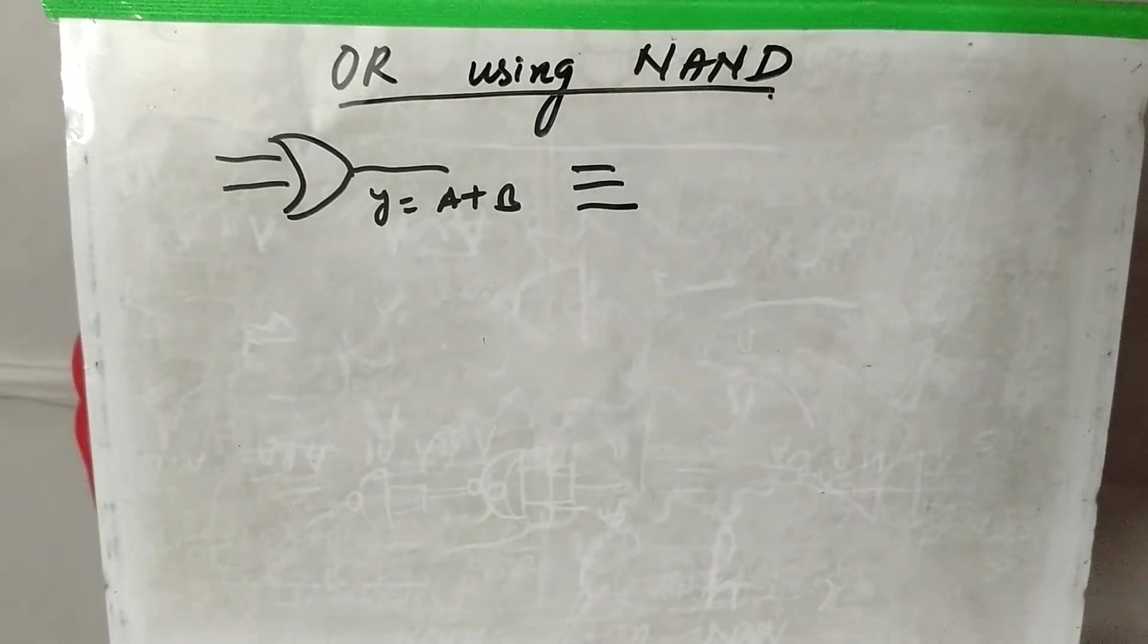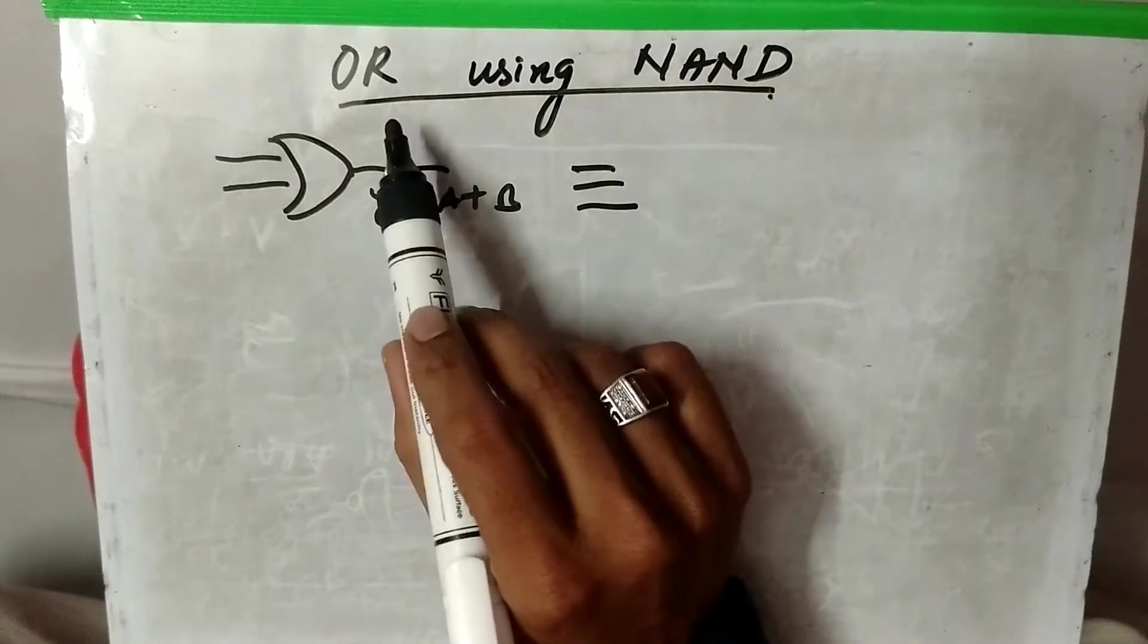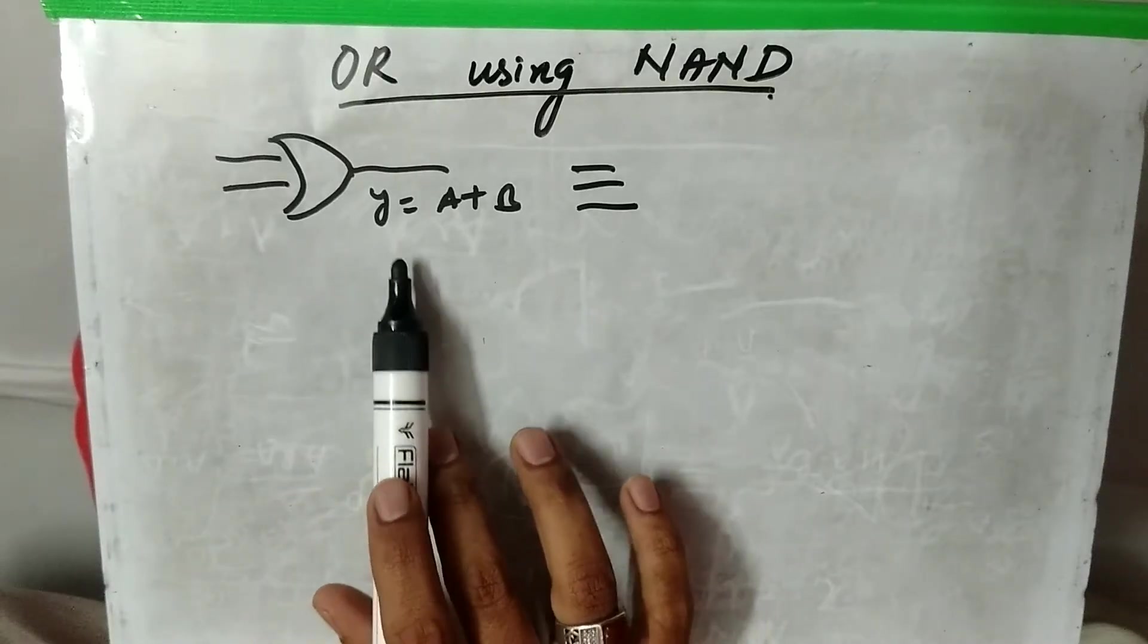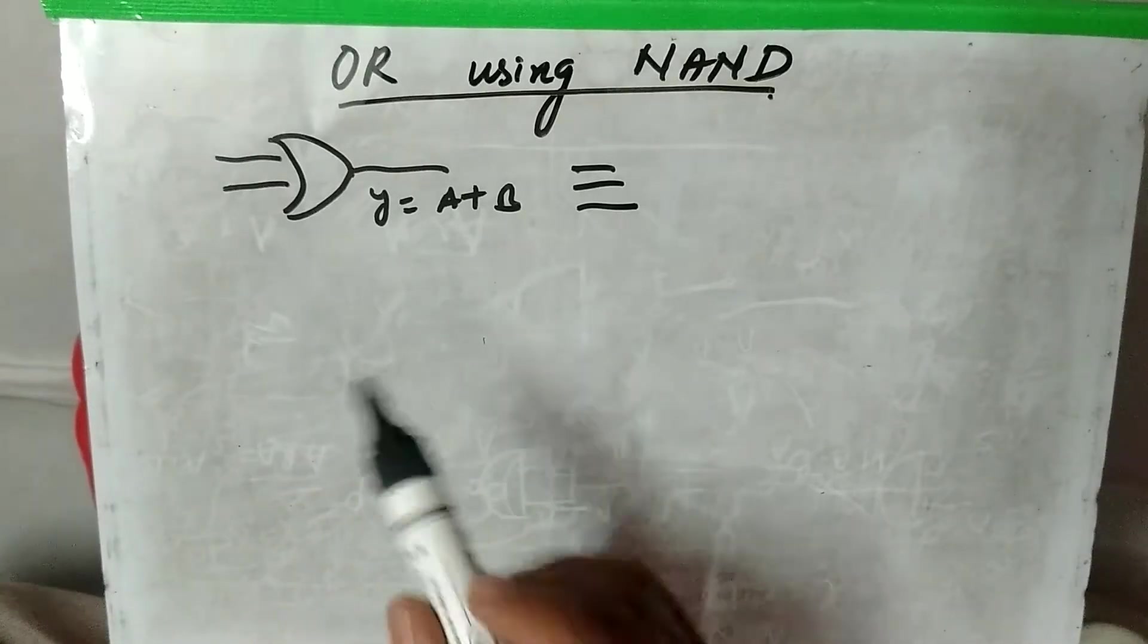Hello friends, today's video we are going to show you how to construct or implement OR using NAND gates. We know that the output of OR gate is Y equals A plus B.